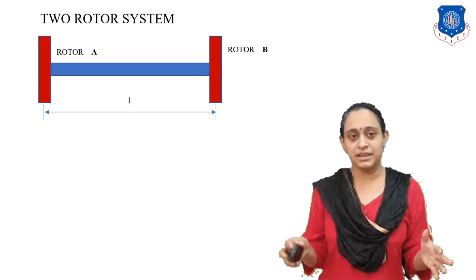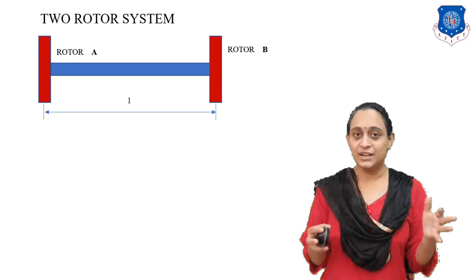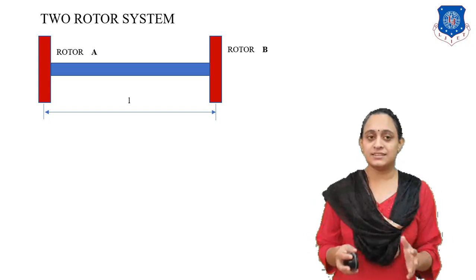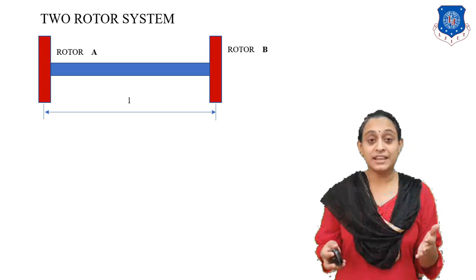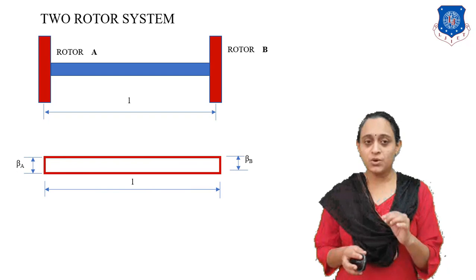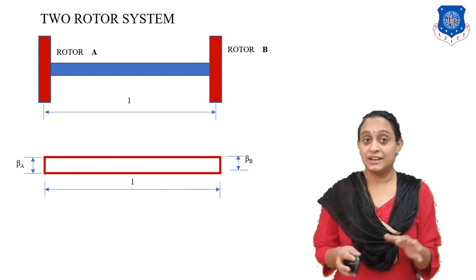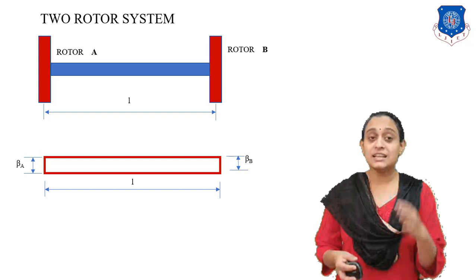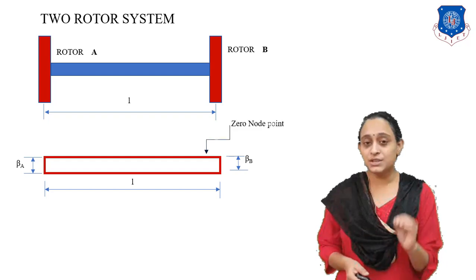For this system we have to consider: if both rotors rotate in the same direction, what will happen? There is a zero node position, because none of the points will vibrate at all. They simply rotate in their simple manner, hence the vibration is zero, and so it is known as zero node rotation.